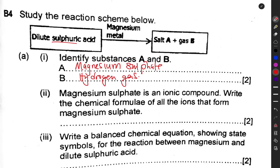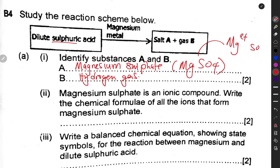Part two: magnesium sulfate is an ionic compound. Write the chemical formulae of all the ions that form magnesium sulfate. Magnesium sulfate is made from the magnesium positive ion (Mg²⁺) and the sulfate negative ion (SO₄²⁻). So the two ions are Mg²⁺ and SO₄²⁻.